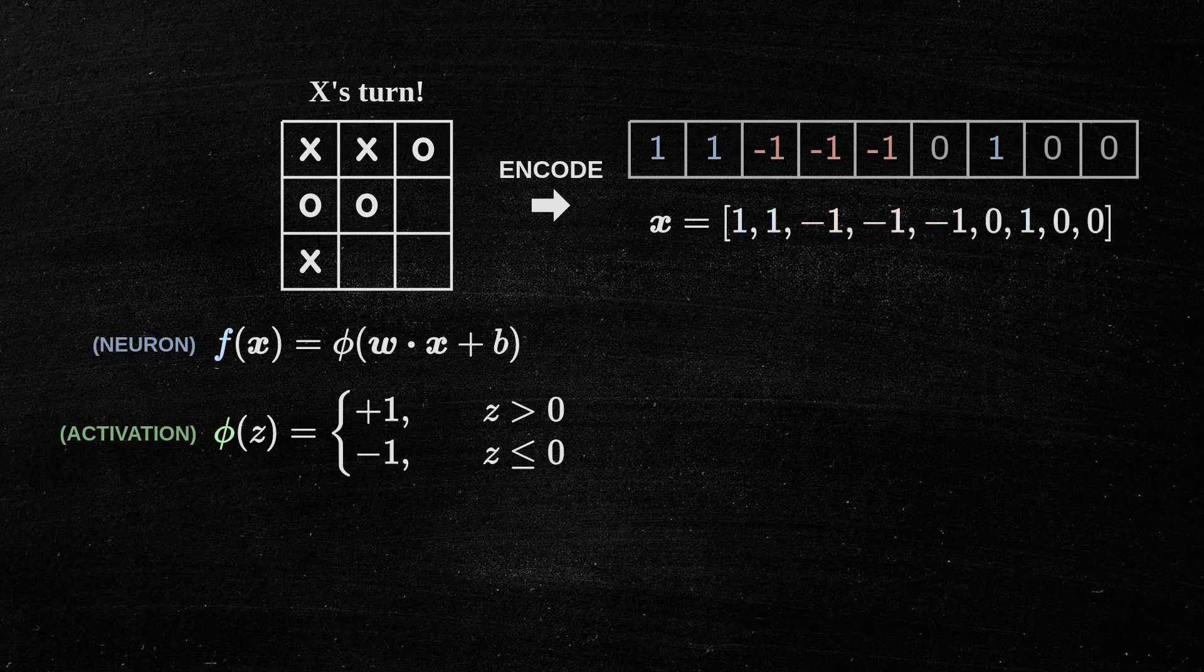Next, we evaluate the different choices for the next move. We assign a value of minus one to bad choices and plus one to the optimal choice.